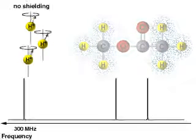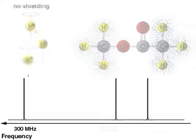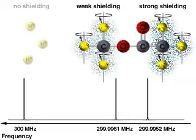Isolated protons resonate at the carrier frequency of the instrument, in this case, 300 MHz. The shielding by the electron cloud lowers the resonance frequency of hydrogens in an organic molecule by a few parts per million. The more shielded a hydrogen, the lower its resonance frequency.